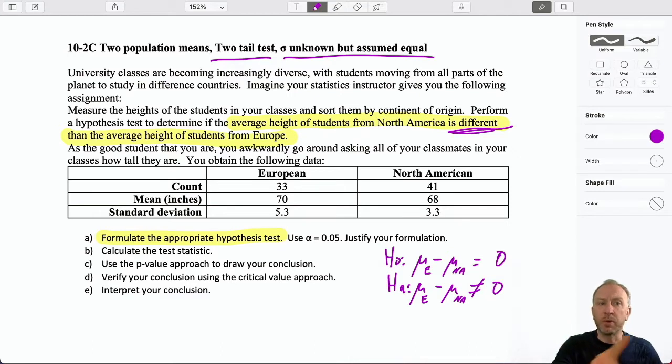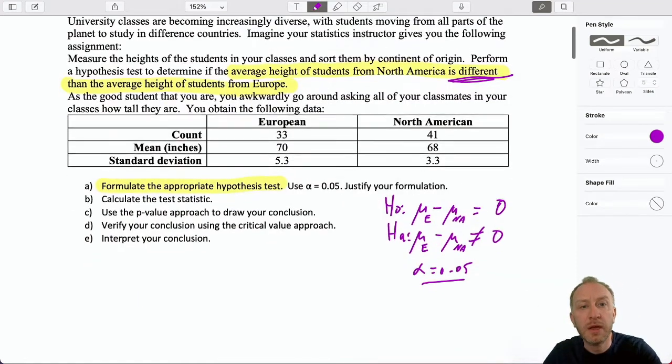So there's my test. We're going to test this at the 0.05 level of significance. That implies that I am comfortable with a 5% chance of committing a type one error. That level of significance measures my comfort level with committing a type one error. That is, rejecting a true null hypothesis.